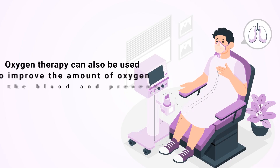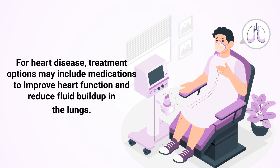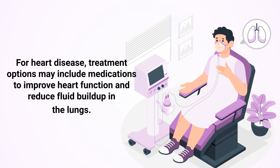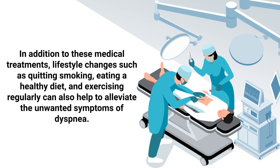Oxygen therapy can also be used to improve the amount of oxygen in the blood and prevent hypoxemia. For heart disease, treatment options may include medications to improve heart function and reduce fluid buildup in the lungs. In severe cases, surgery may also be necessary for certain conditions such as a pulmonary embolism.